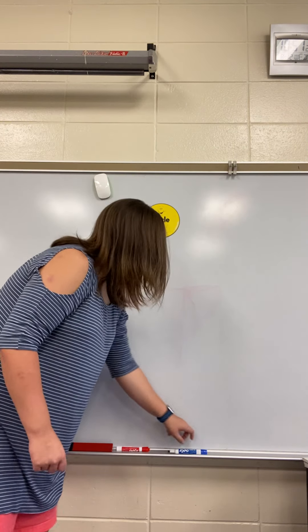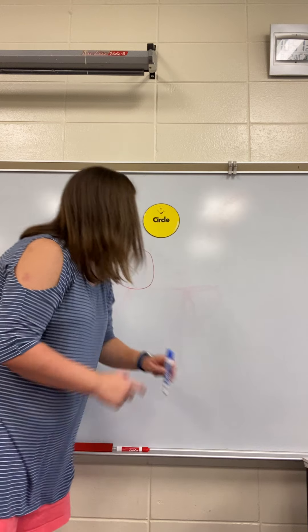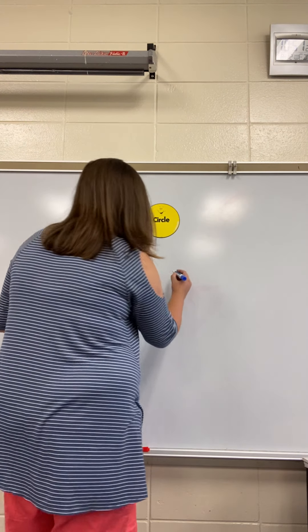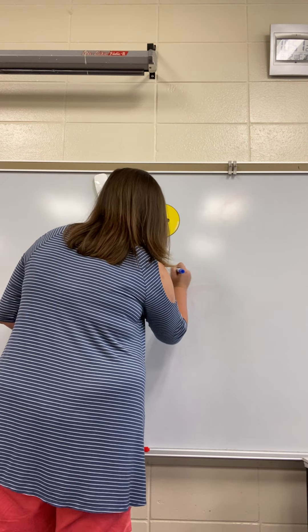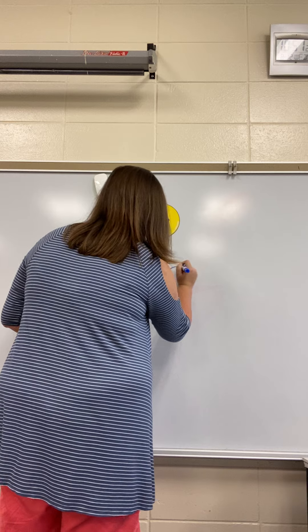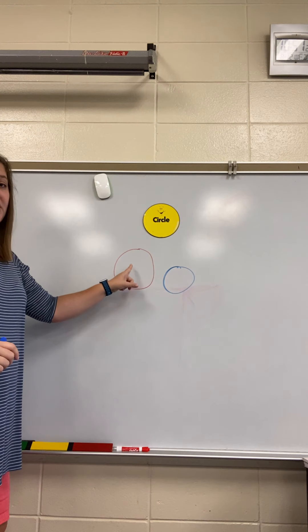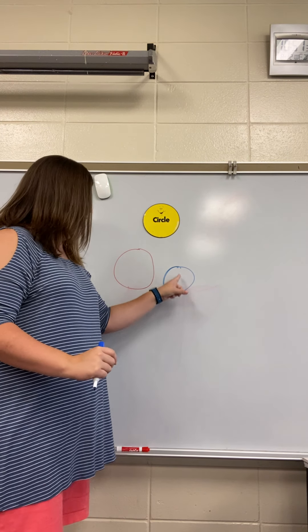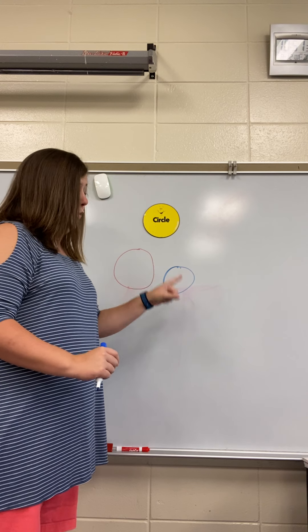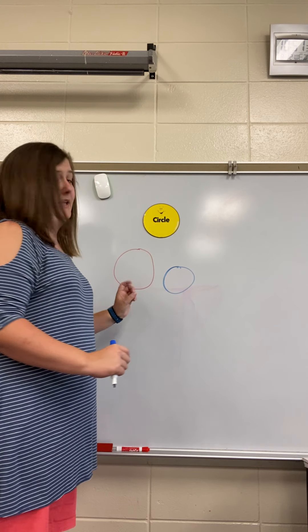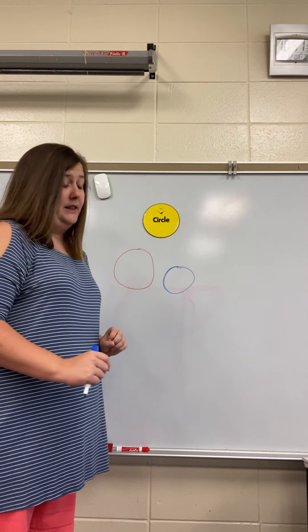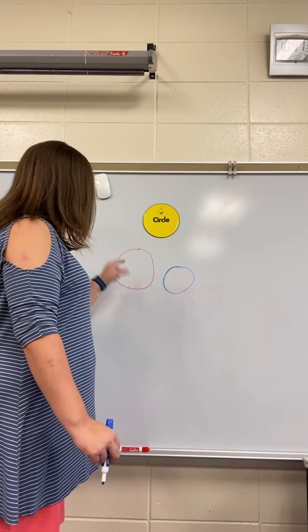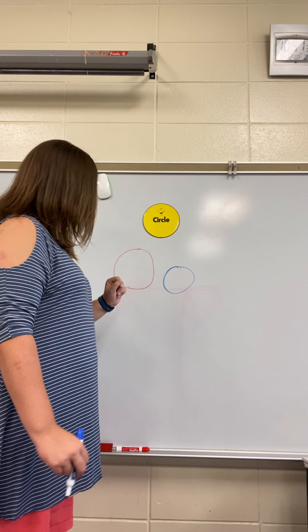Sometimes we have different size circles. I have a big red circle and a small blue circle. Which one is the biggest? The red is the biggest.